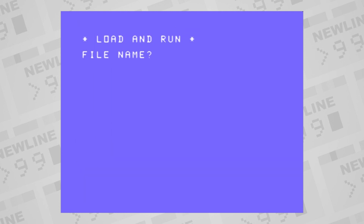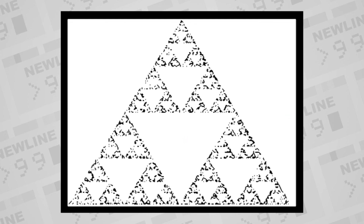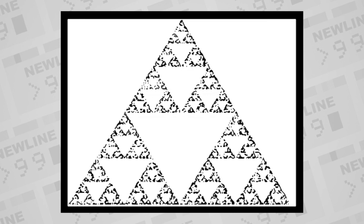We're done! We assemble, load, and run. Everything looks great! You can find this code on the NewLine99 website, and you're welcome to incorporate parts of the program into your own programs. I hope you catch the next video on floating-point arithmetic. See you next time!